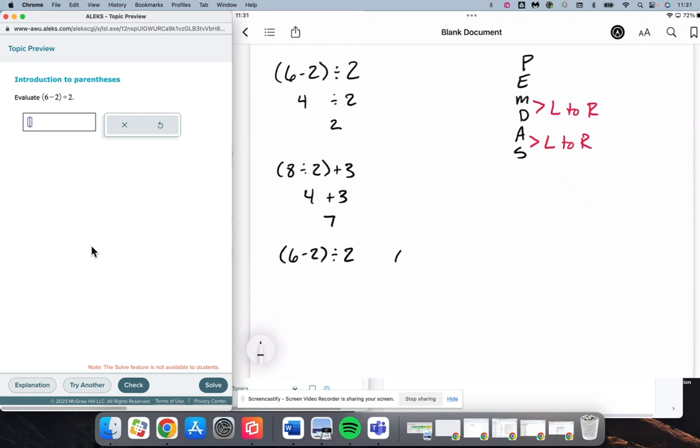Now it's important to recognize that if those parentheses weren't there, this 2 divided by 2 would be the first thing that I would do because we would do division before we would do subtraction. But we do have parentheses, and so the parentheses are guiding us and telling us what needs to be done first.